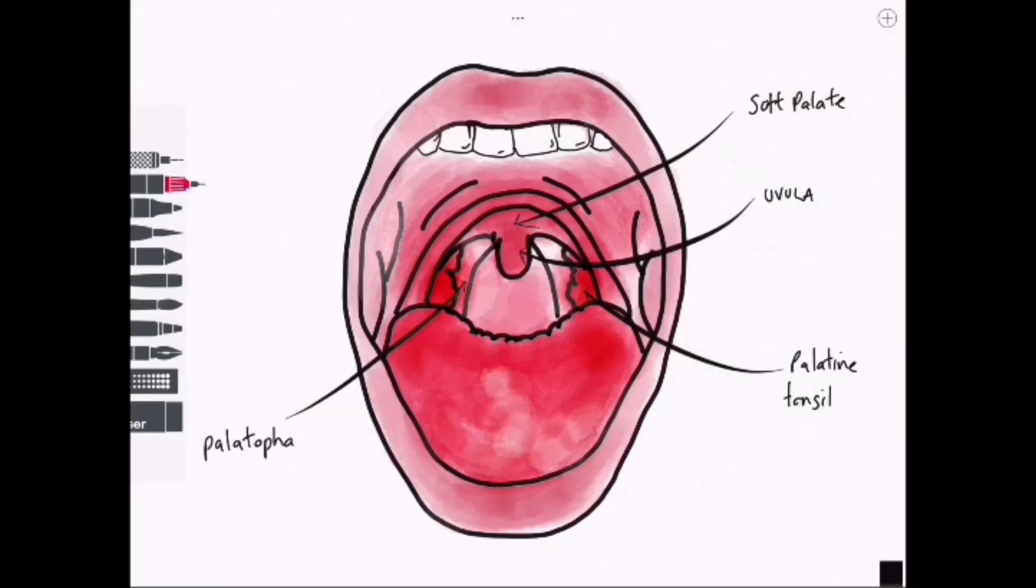This depression that the palatine tonsils sits in is created by an arch posteriorly. This is called the palatopharyngeal arch. There is an arch sitting anteriorly and this is called the palatoglossal arch.